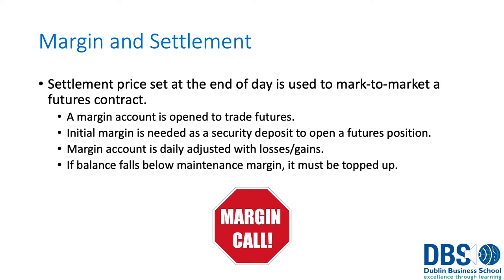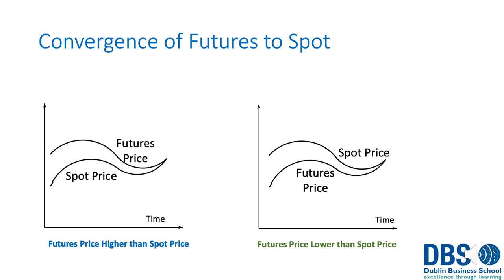Every day there is a settlement price at the end of the day, and the contract is marked to market — in other words, revalued to what it's worth now. If you make a profit on the day, money is deposited into your margin account. If you make a loss, money is deducted. Depending on the adjustment required, you could fall below the maintenance margin and would then have to add money back in. Ultimately, the futures price and spot price come together over time.